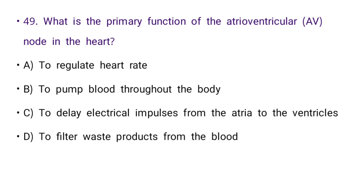Next: What is the primary function of the atrioventricular (AV) node in the heart? Options: to regulate heart rate, to pump blood throughout the body, to delay electrical impulses from the atria to the ventricles, or to filter waste products from the blood.